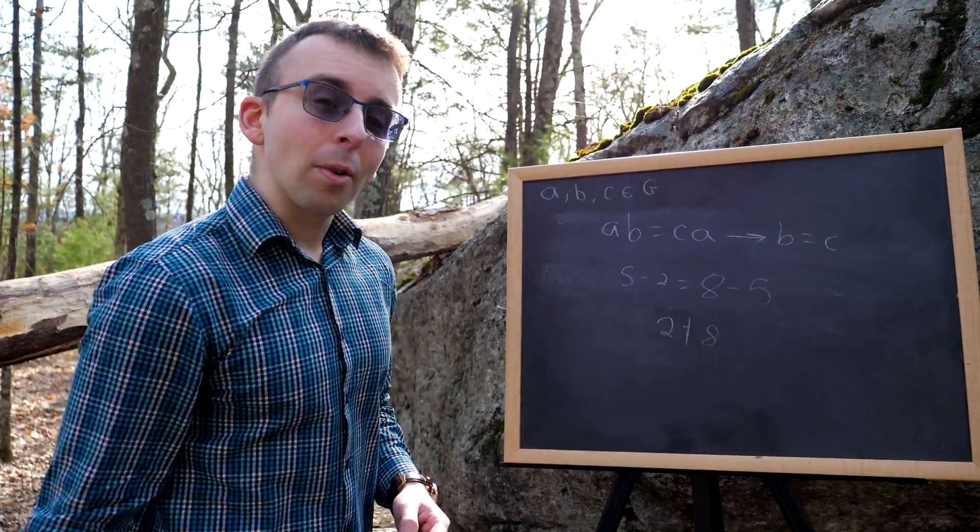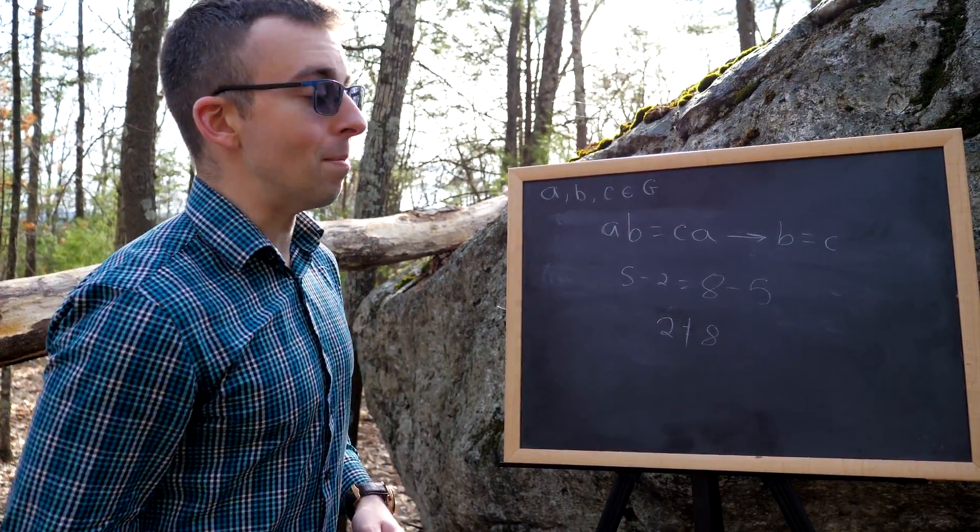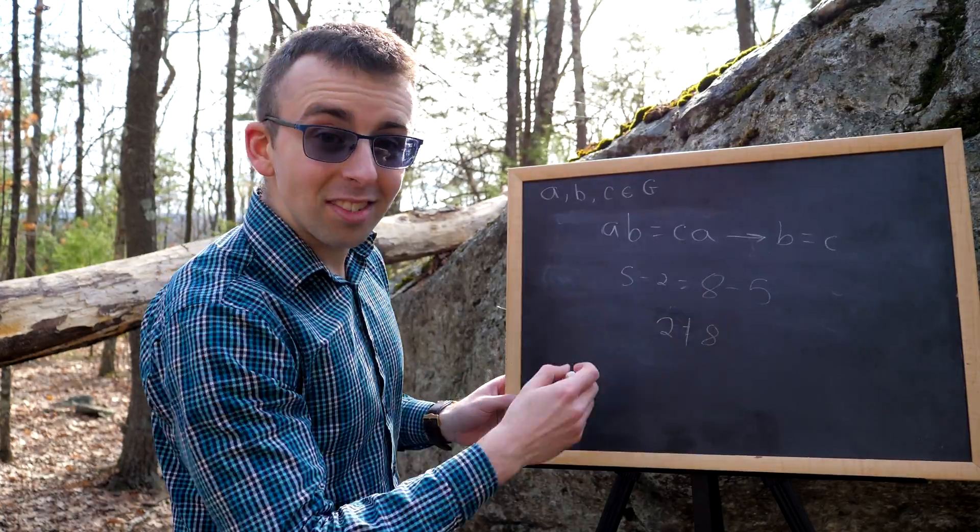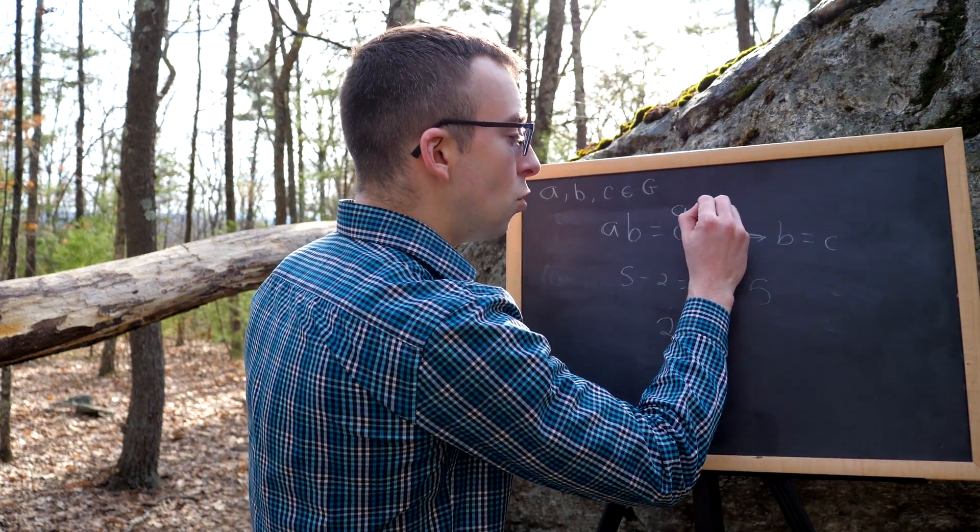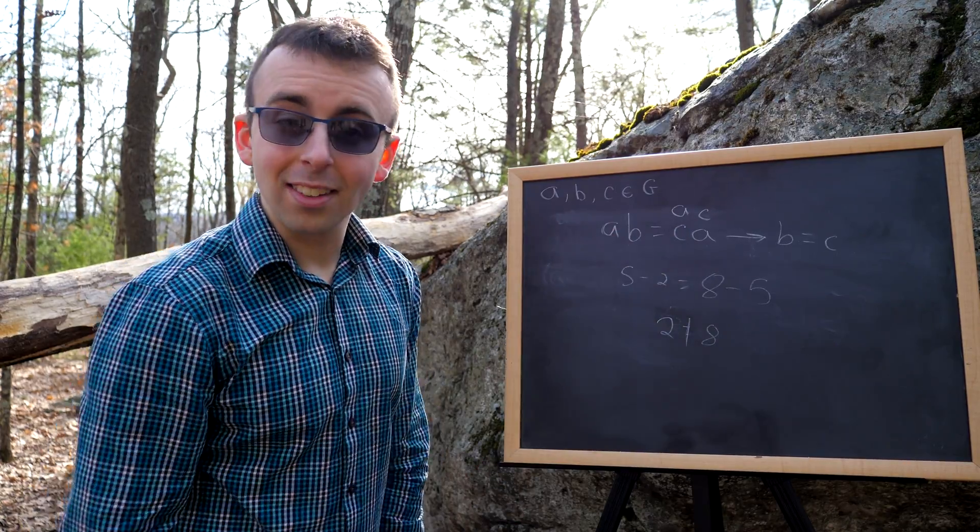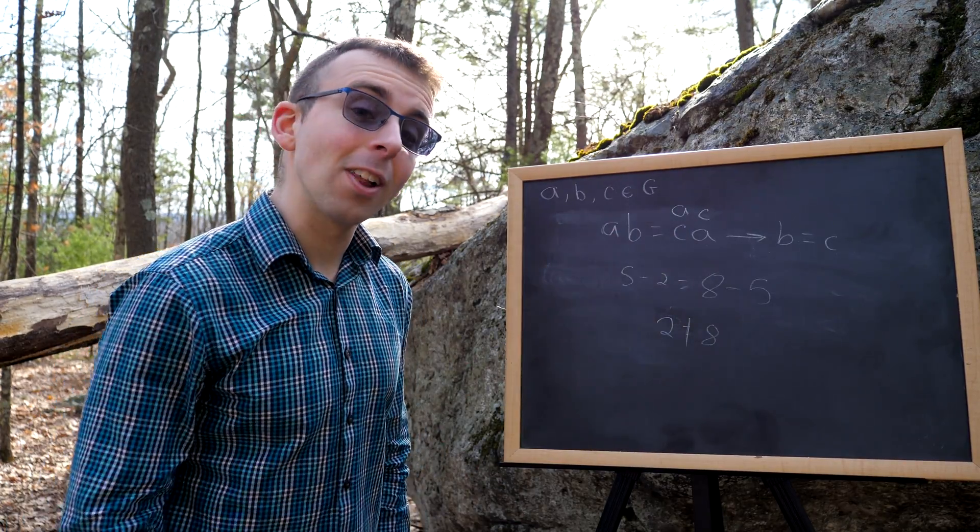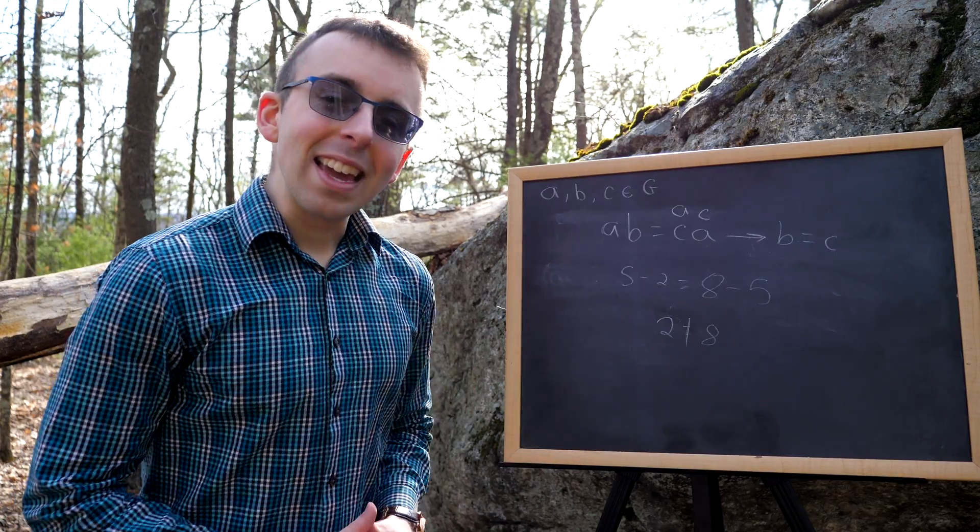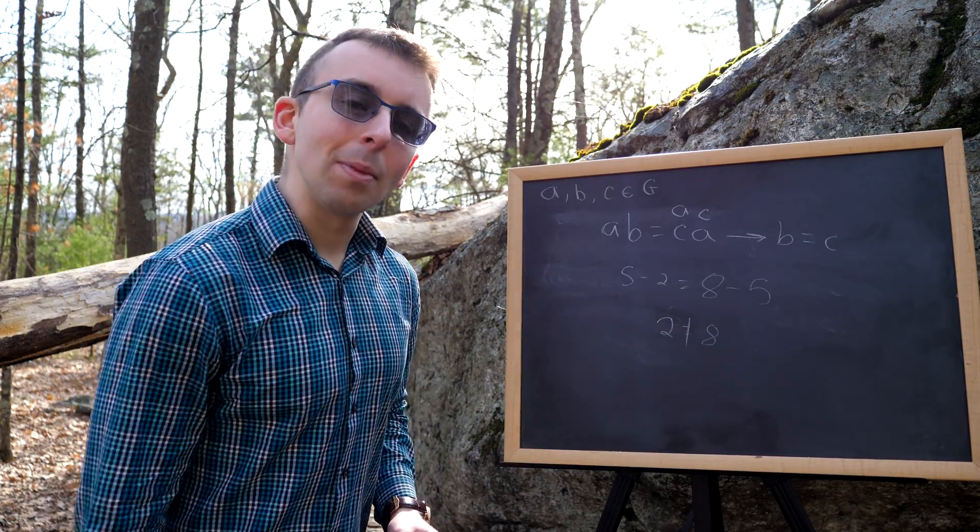Now, if we knew that the operation we were working with was commutative, we could change C times A into A times C, and then we'd have A on the same side on both sides of the equation, and we could use the cancellation law that we just proved. So that's how you prove the cancellation law for group elements. I hope this was helpful, and thank you for watching.